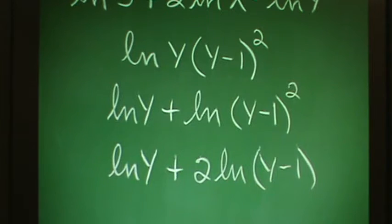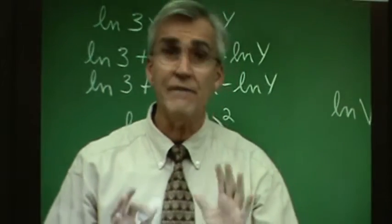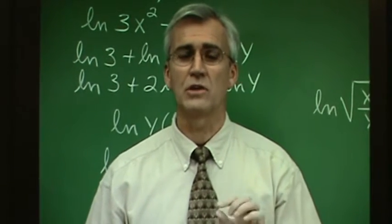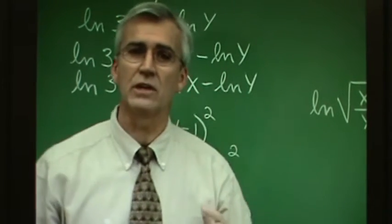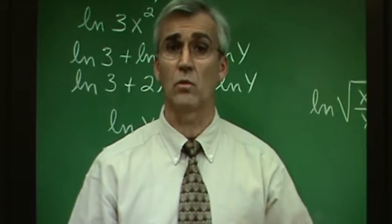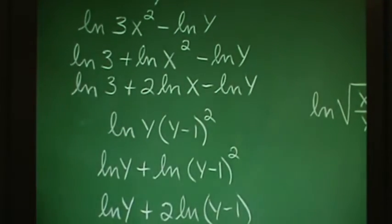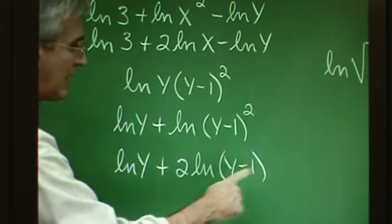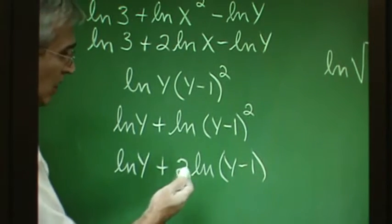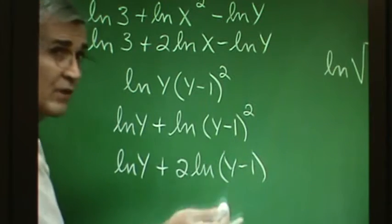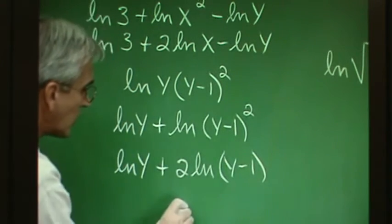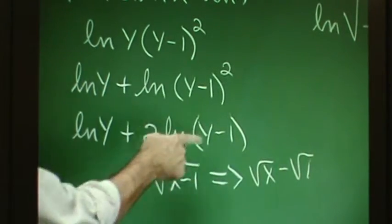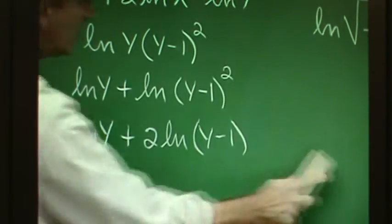At this point, when working with properties of logarithms, it's just as important to know what you can't do as what you can do. There's a tendency to try distributing the logarithm through a binomial and think of ln(y minus 1) as ln y minus ln 1 — that just doesn't work. The logarithm doesn't distribute, just as the square root of x minus 1 does not equal the square root of x minus the square root of 1. There is no distribution idea in the notion of logarithm.